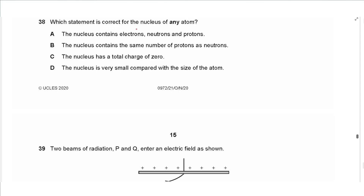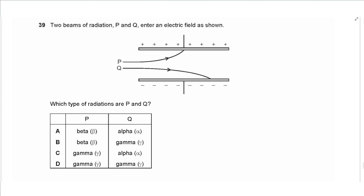Question 38 says: which statement is correct for the nucleus of any atom? The nucleus contains electrons — not correct. The nucleus contains the same number of protons and neutrons — not necessarily. The nucleus has a total charge of zero — no, because it contains positively charged protons. The nucleus is very small compared to the size of the atom — that is correct.